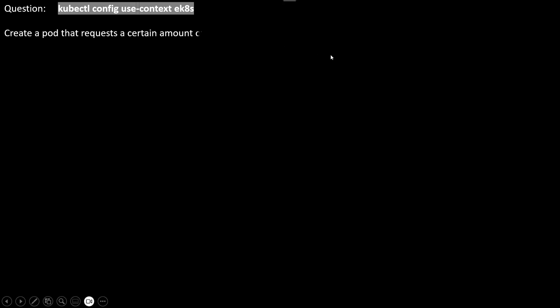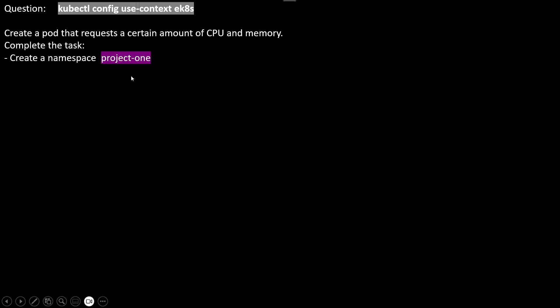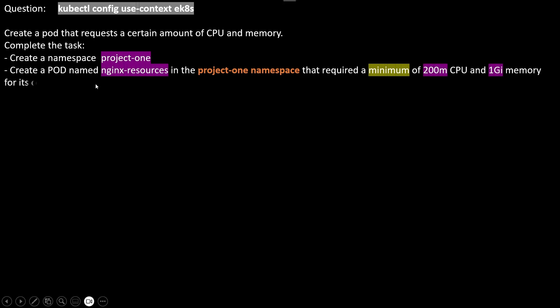The question would be that you need to use this context. Create a pod that requires a certain amount of CPU and memory. First, create the namespace and the namespace name is project-1. After that, create a pod in the project-1 namespace that requires a minimum of 200 millicores CPU and 1 gig memory for its container.